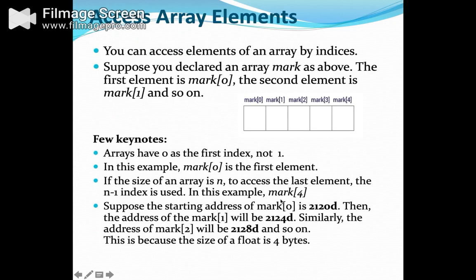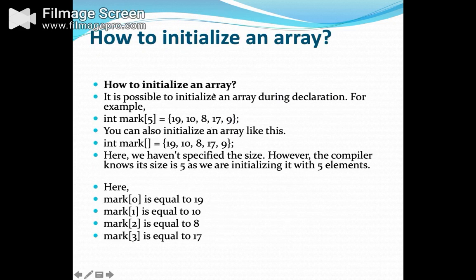To initialize an array, suppose we declare 'marks[5]' — five elements can be stored directly. You can also initialize an array without giving the size; automatically the compiler will calculate the number of items stored in it. The first block will be called mark[0] which stores 19, mark[1] which stores 10, and similarly all the values can be indexed and called by their index number.